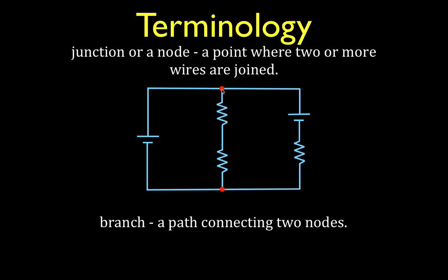This is the place where the wires come together. The branch is a path that connects two nodes, and we have three branches. We have this branch that connects these two nodes, this branch that connects these two nodes, and this branch that connects these two nodes. Please be aware that you should know what a node is and be able to identify the nodes, what the branches are, and be able to identify the branches.